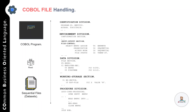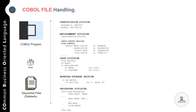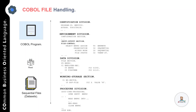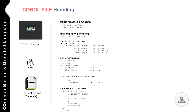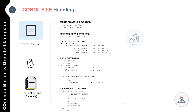In the file control section you specify the name of the file you will be using within your COBOL program, and you also specify the corresponding DD name that will be used in the JCL. After that you have the data division, where in the file section you specify the actual layout of the file — that includes the name of the fields and the length of those corresponding fields.